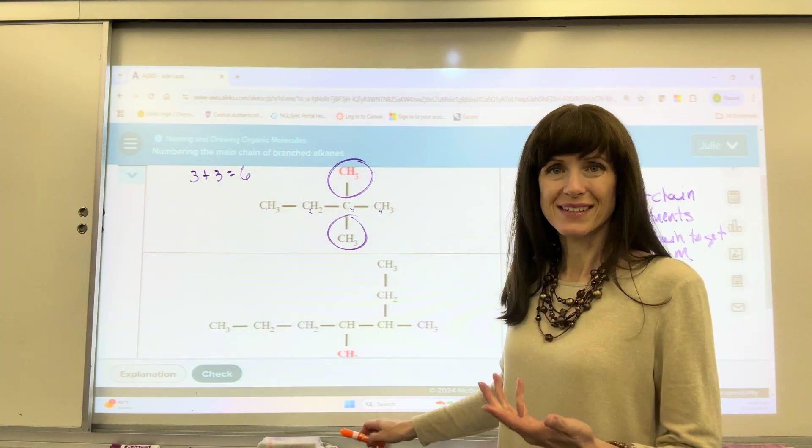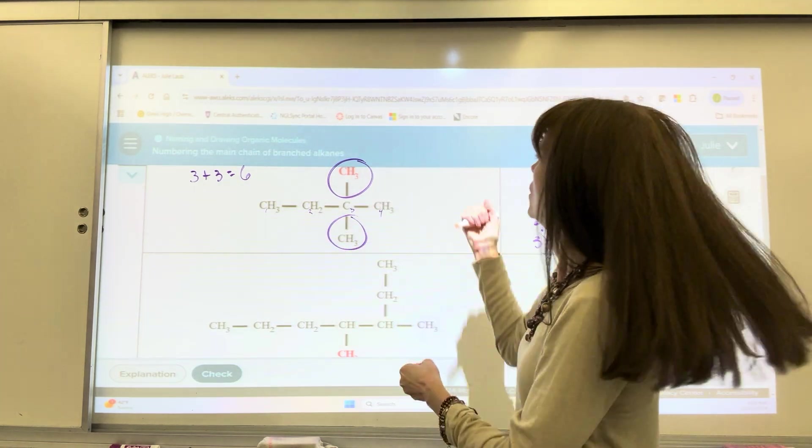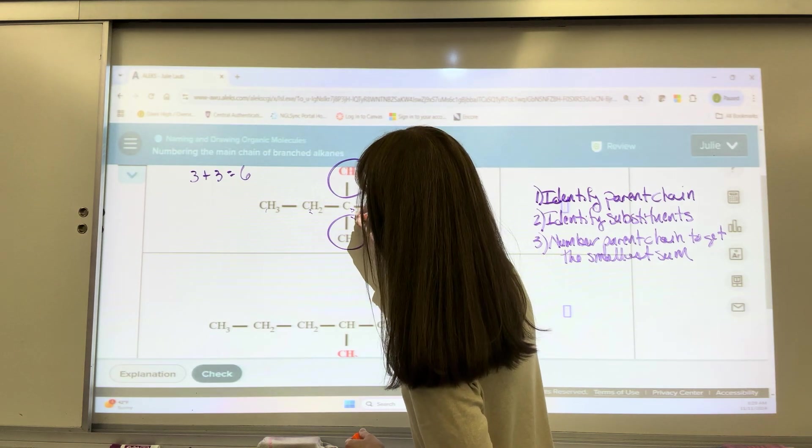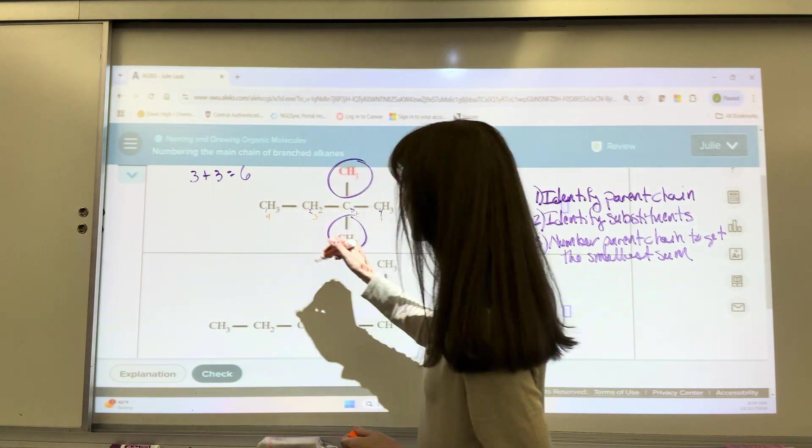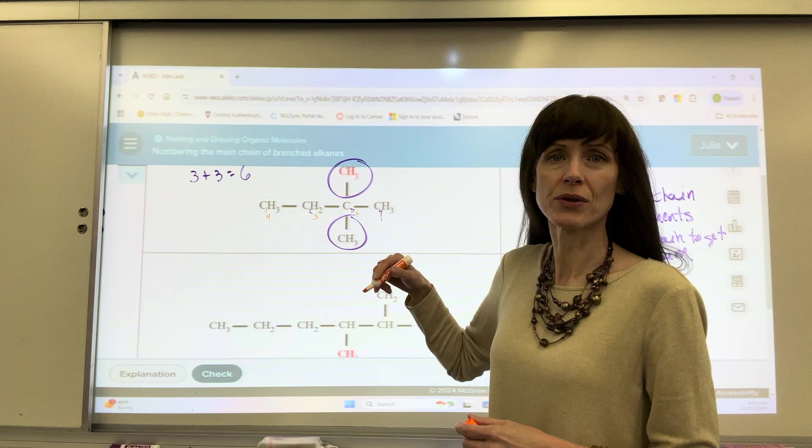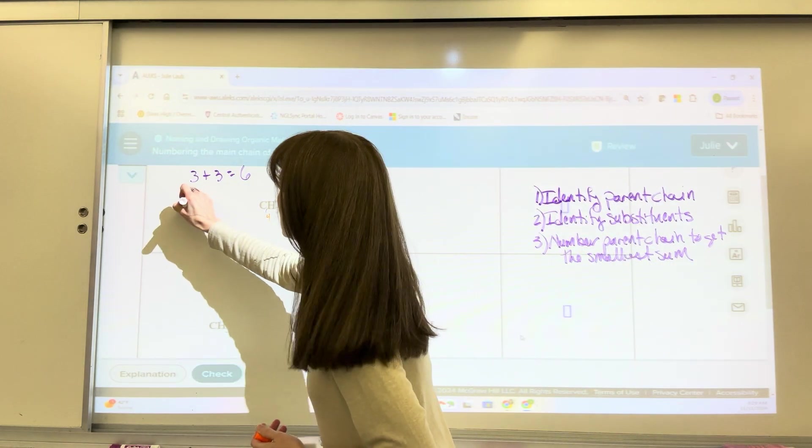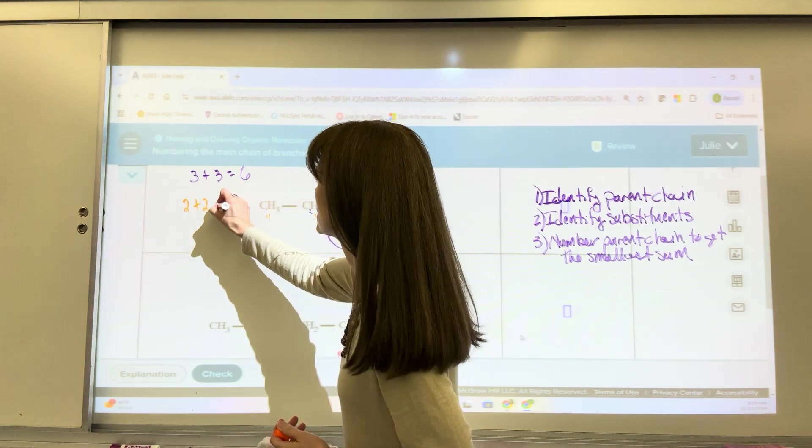Well, let's switch it. Let's go right to left. We're going to have 1, 2, 3, 4. Well, these two methyl groups are both on the 2 carbon. So 2 plus 2, their locations equals 4.